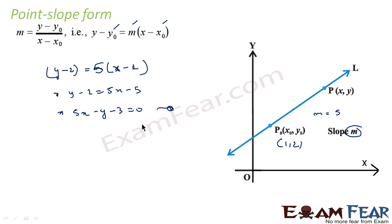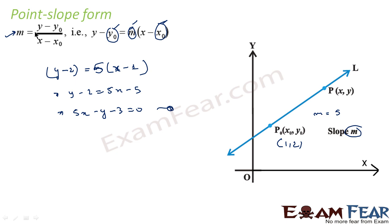This is the final equation we will get. So what we are trying to say is that if we know the slope of the line and we know one coordinate (x, y), then we can write the equation in the form y minus y0 is equal to m into x minus x0. This is because m, which is the slope, is nothing but (y minus y0) divided by (x minus x0).